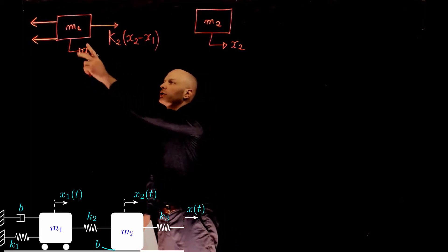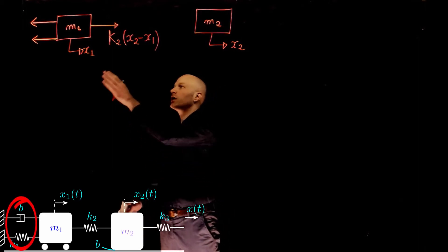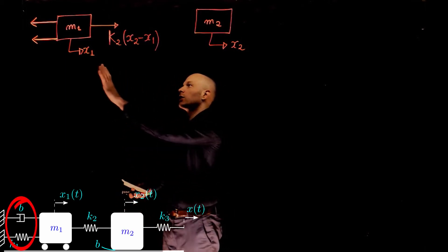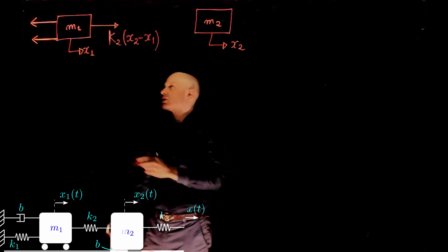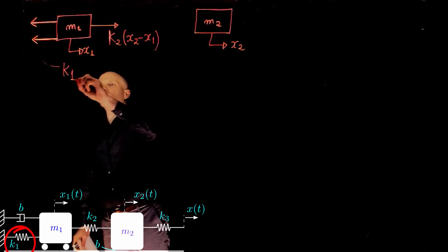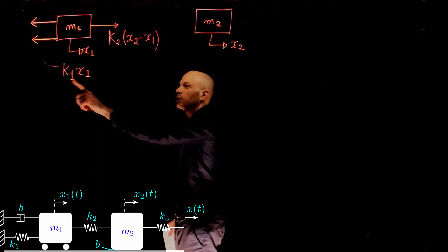Mass m1 is connected through a spring and a damper to a fixed reference frame. They both apply forces now to the mass. As it moves to the right, those forces will be pointing to the left. The force due to the spring is k1, x1, displacement of the spring, times the stiffness of that spring.